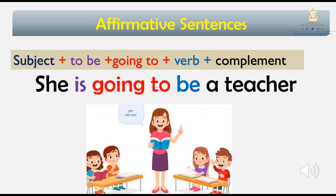What do you need to make a sentence in affirmative form? You are going to need a subject — in this case, she. Then you need a verb to be — in this case, is. Then going to, then a verb — in this case, to be — and then the complement, the last part of the sentence — in this case, a teacher. She is going to be a teacher. Subject, verb to be, going to, verb, and complement.